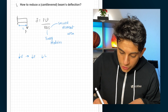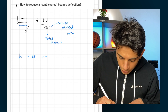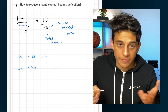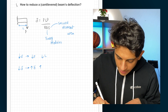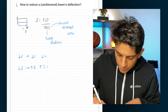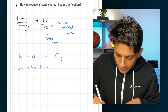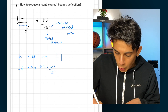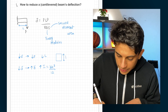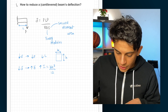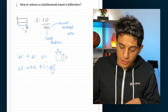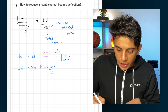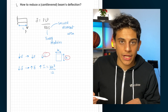You can also change the Young's modulus and the second moment of area. To reduce deflection, you'd increase the Young's modulus — get a stiffer material — or increase the second moment of area. For a square cross-section, the second moment of area equation is BH³ over 12. Since height is cubed, changing it makes a much bigger difference than changing the base. So the two biggest factors are length and height, since they're both cubed.